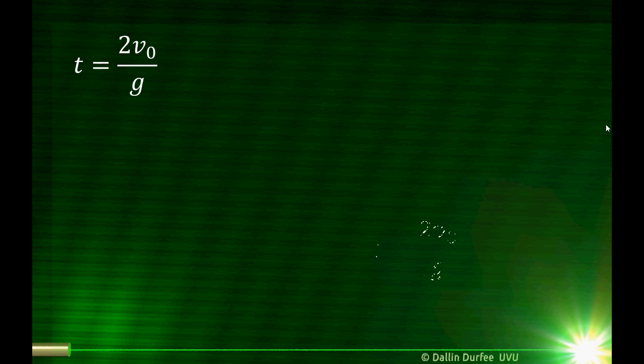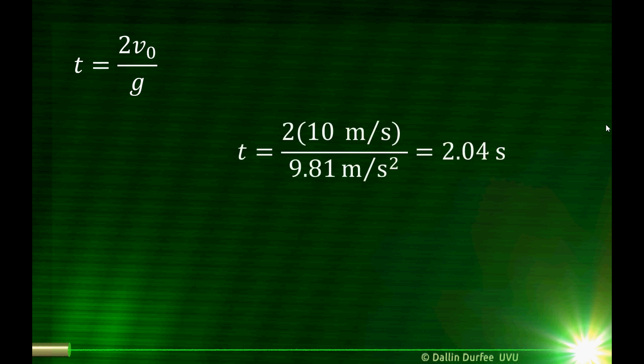Now I just plug in my numbers. v-naught is 10 meters per second, g is 9.81 meters per second squared, and I find that the time the keys are in the air is 2.04 seconds.